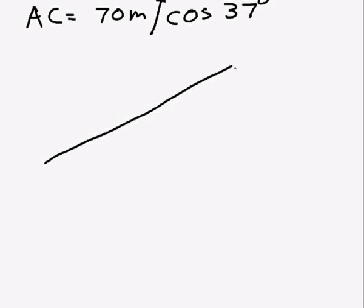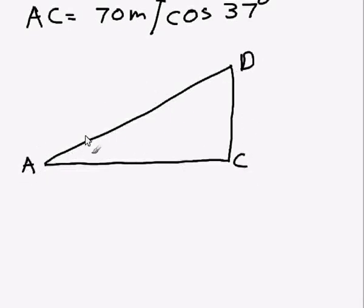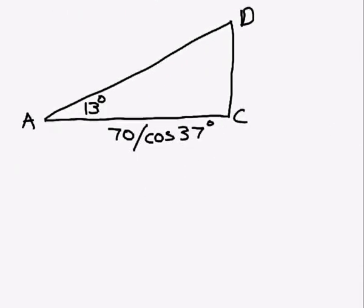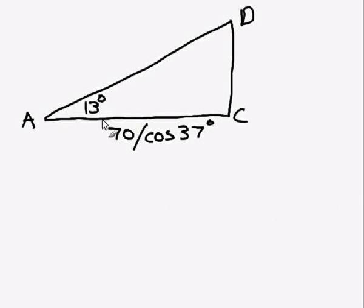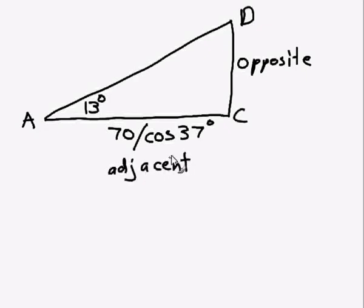So I can redraw the vertical triangle, which is triangle ACD. Now, we've got the 13 degree angle of elevation, and the bottom side AC, we know the length is 70 on cos 37 degrees. So we want to find out side length AD. Nope, we want to find out side length CD, which is the opposite side relative to the 13 degrees. And the side AC is our adjacent side, and we know this side length.